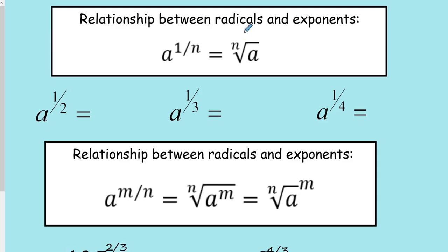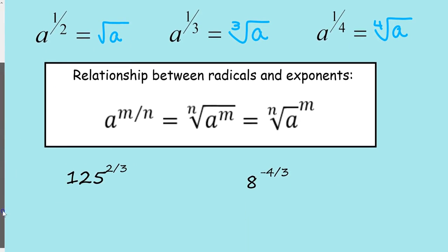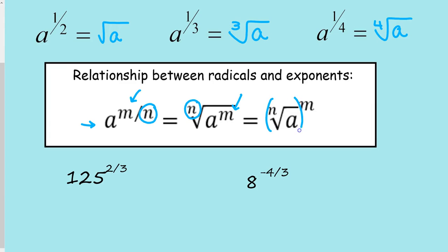The most commonly used ones: a to the 1/2 power is the square root of a; a to the 1/3 power is the cube root of a; a to the 1/4 power is the fourth root of a. You could also have a rational exponent with a numerator other than 1. For a to the m/n: the denominator represents the kind of root, and the numerator represents the power. So a to the m/n equals the nth root of a to the m, written either way.